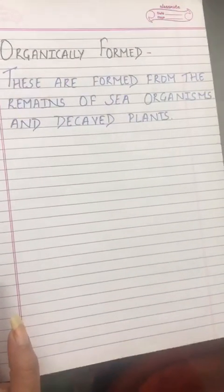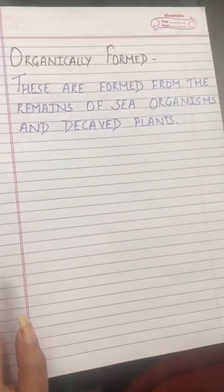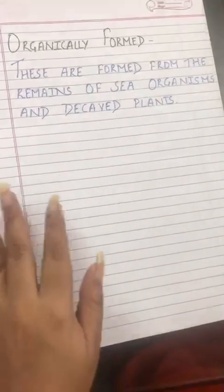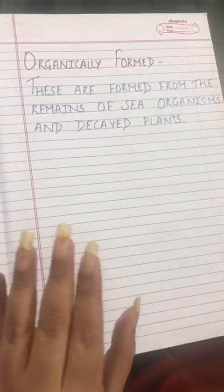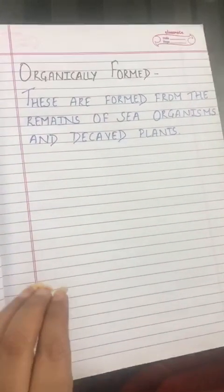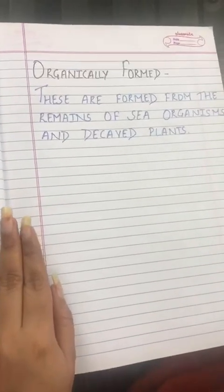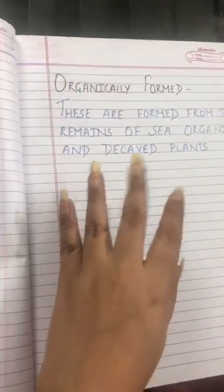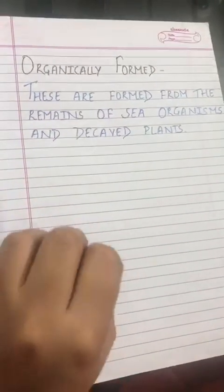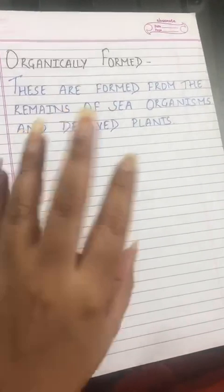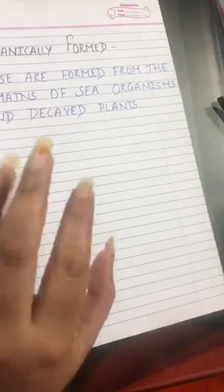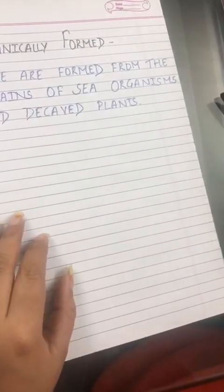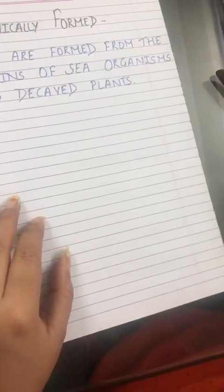The third type is organically formed sedimentary rocks. These are formed from the remains of sea organisms and decayed plants. Whatever remains of these organisms and plants makes the sedimentary rock, giving us information about how organically formed sedimentary rocks are created.